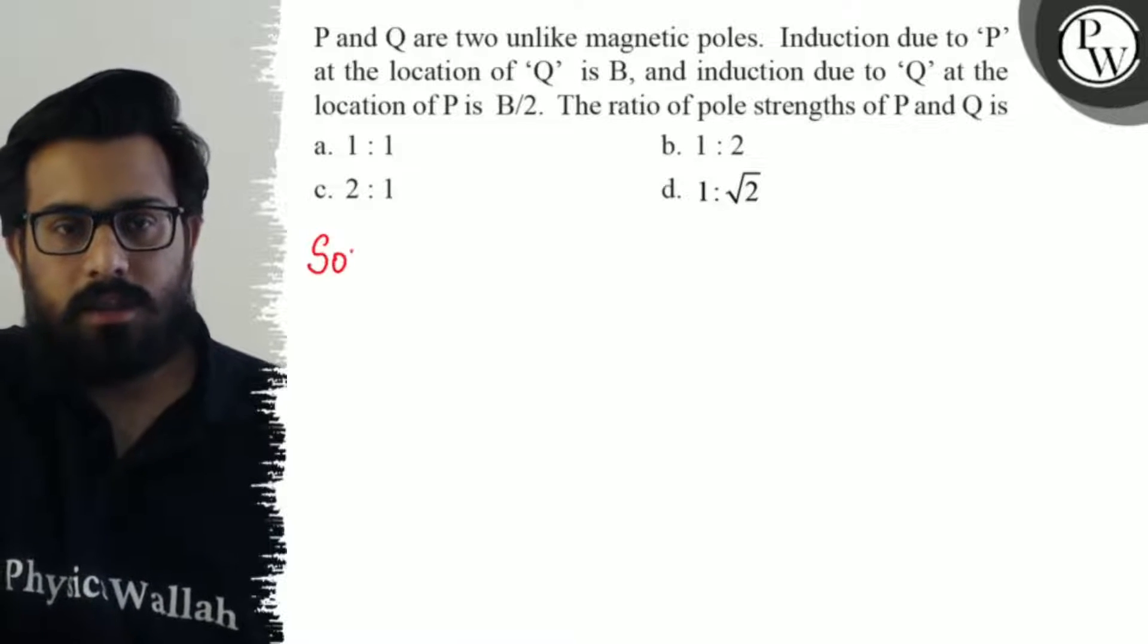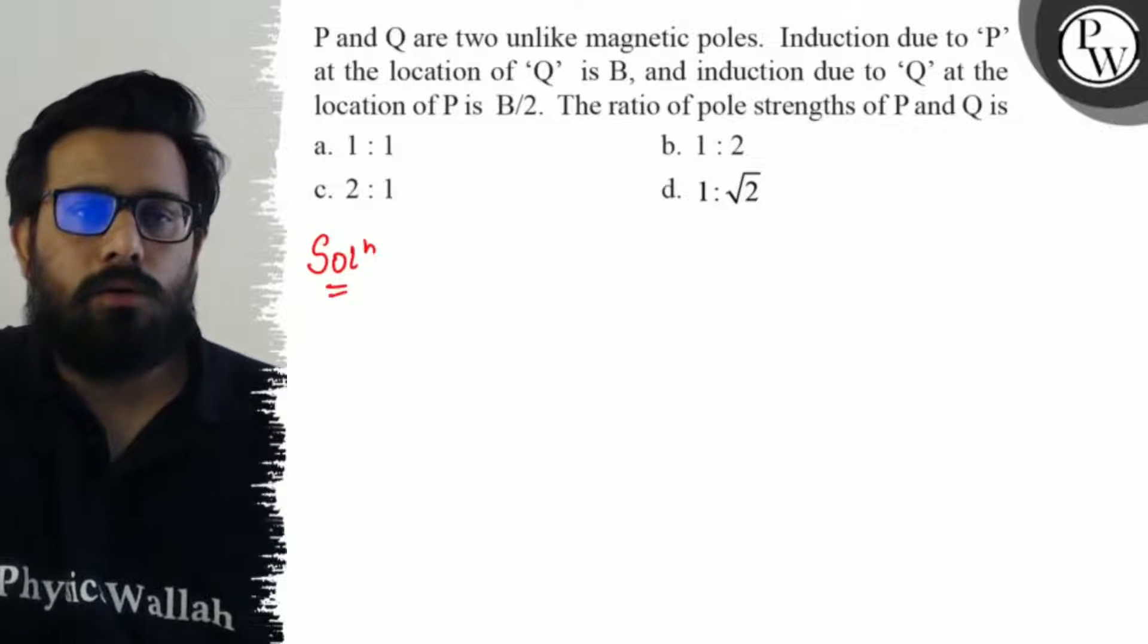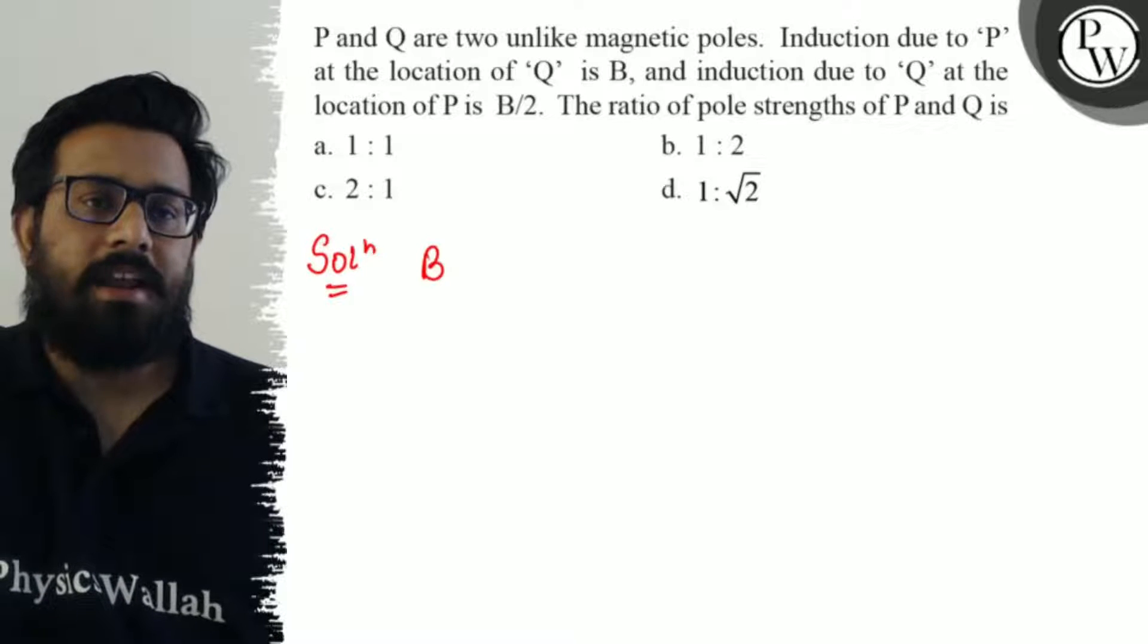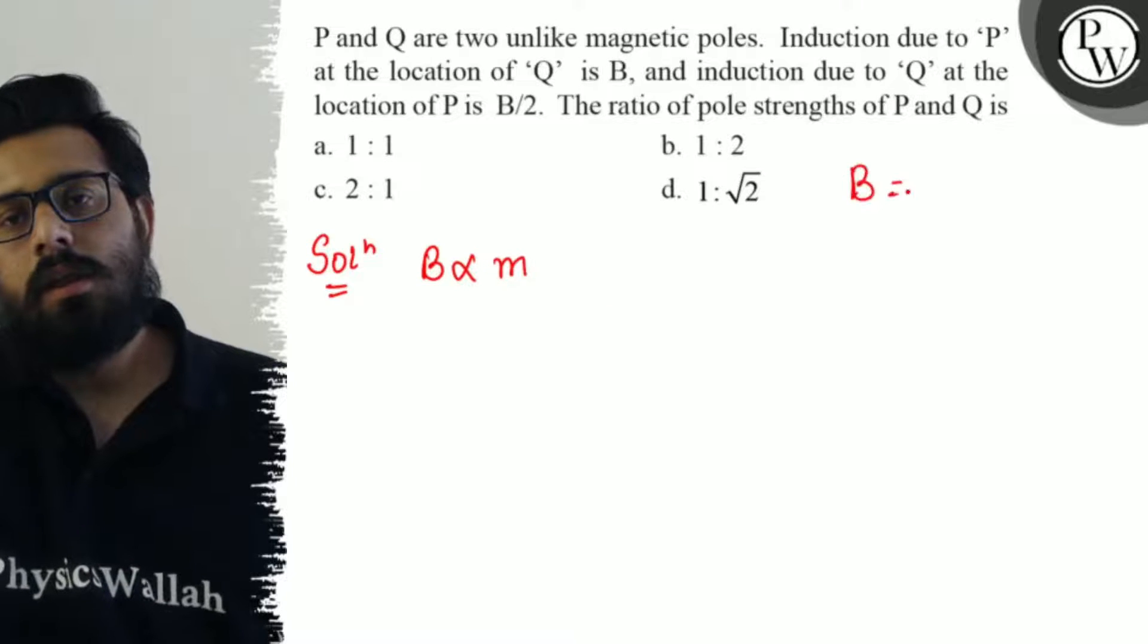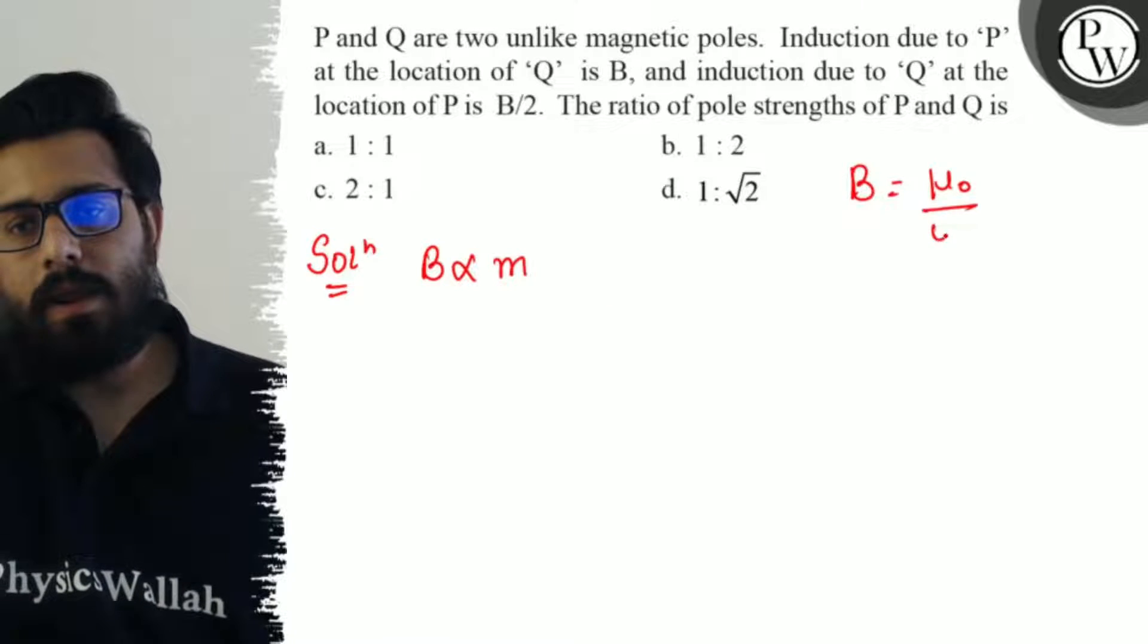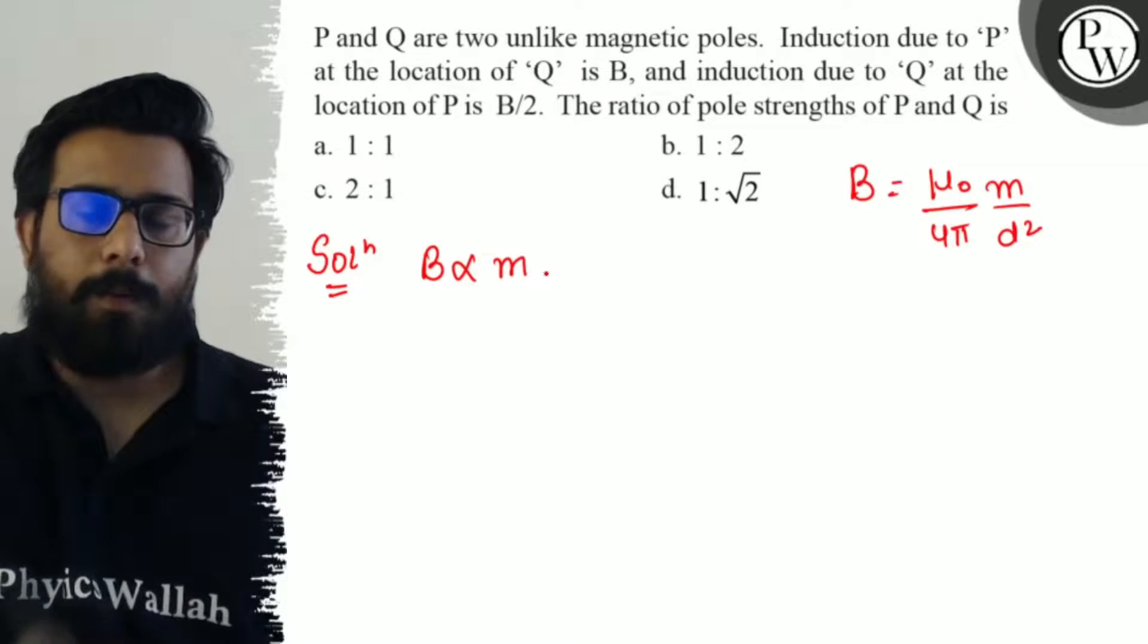So here in this portion, we know that the magnetic field intensity is proportional to the pole strength. Okay, we know the relation: μ₀/4π times M/r². So here we know that B is proportional to M.